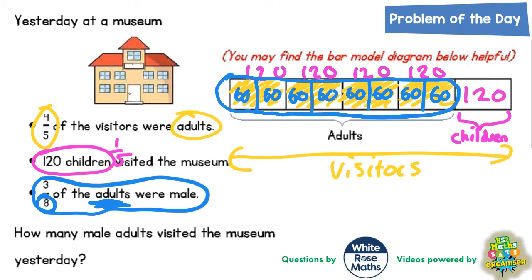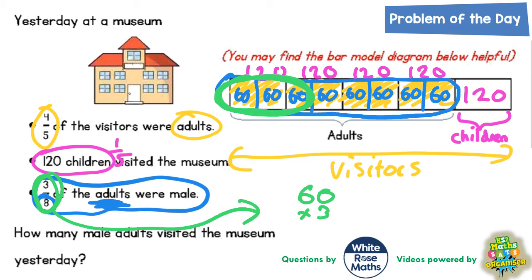So we've split the adults into eighths. It says three-eighths of the adults were male, so we're only interested in three out of the eight sections of the adults. Each section is worth 60, so this three-eighths is basically going to be three lots of 60. Three sixties are 180. So the final answer to how many male adults visited the museum is one hundred and eighty.